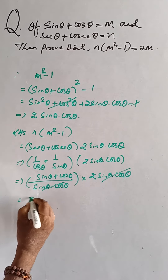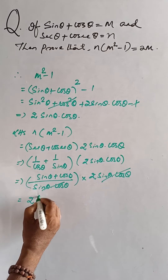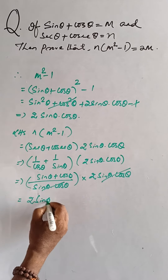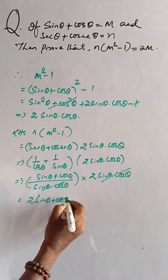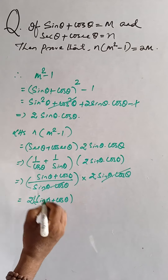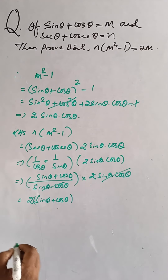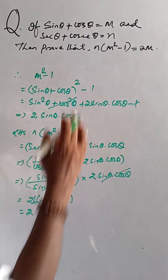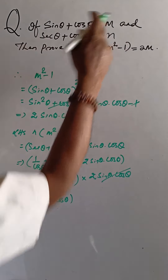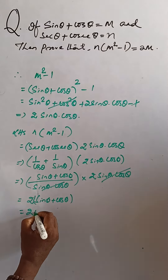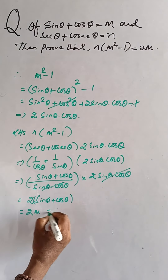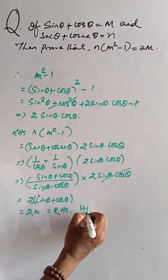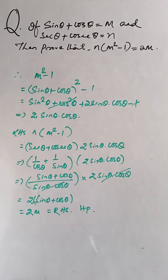This gives 2(sinθ + cosθ), and since sinθ + cosθ = m, the result is 2m, which equals the right-hand side. Hence proved.